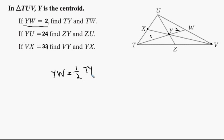We know YW is 2, so 2 equals one-half of TY. We multiply both sides by 2, and we get TY equals 4.